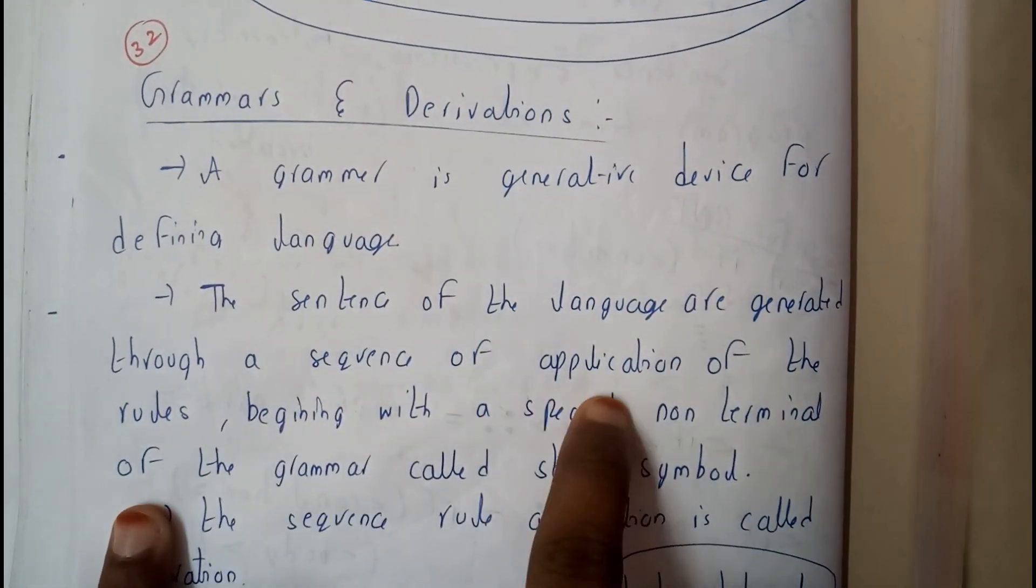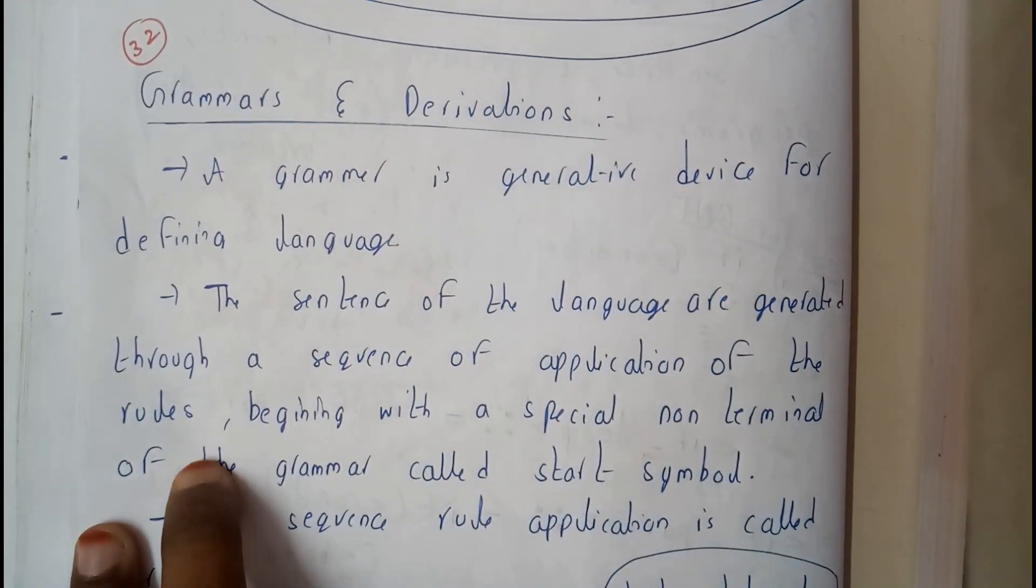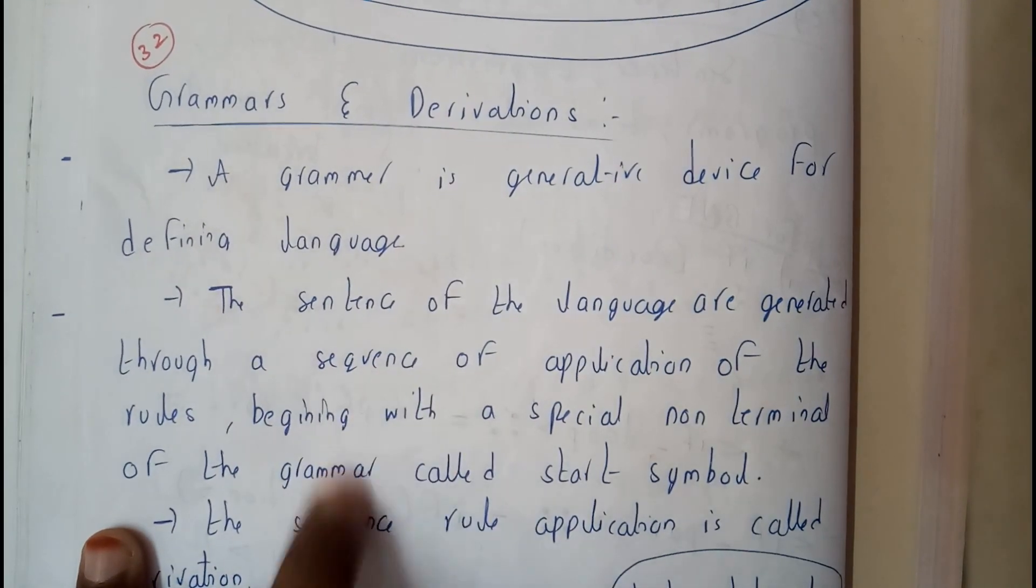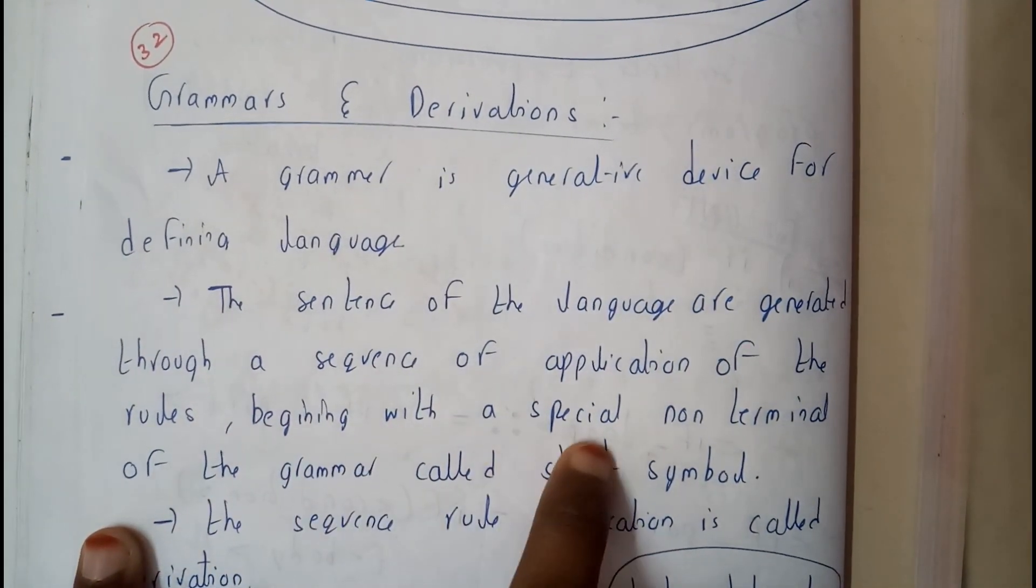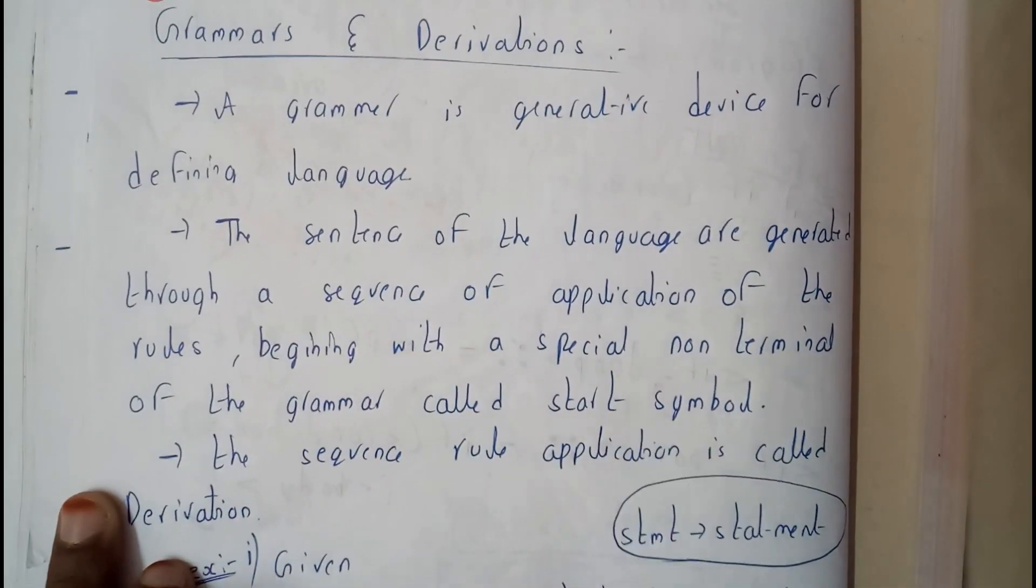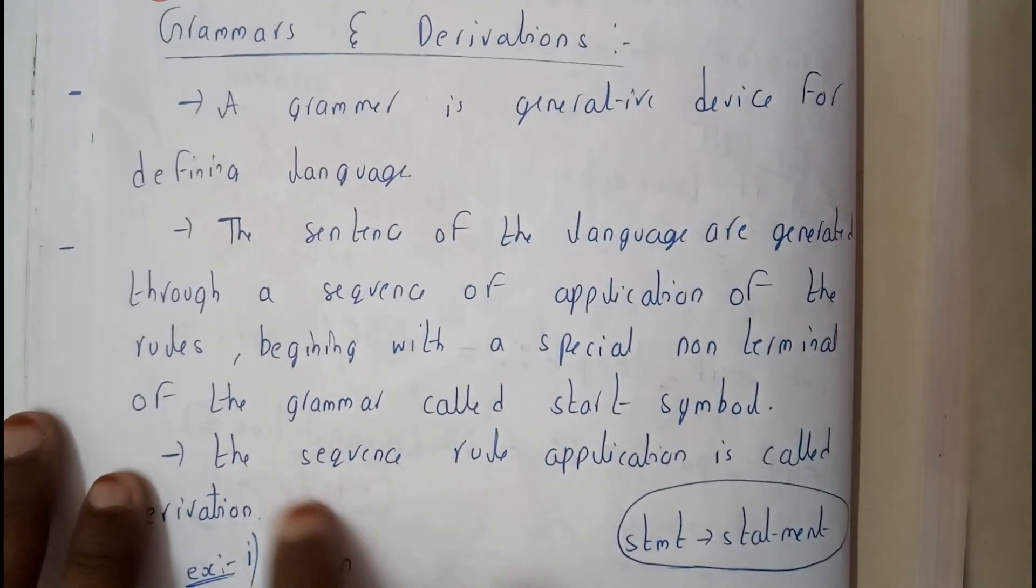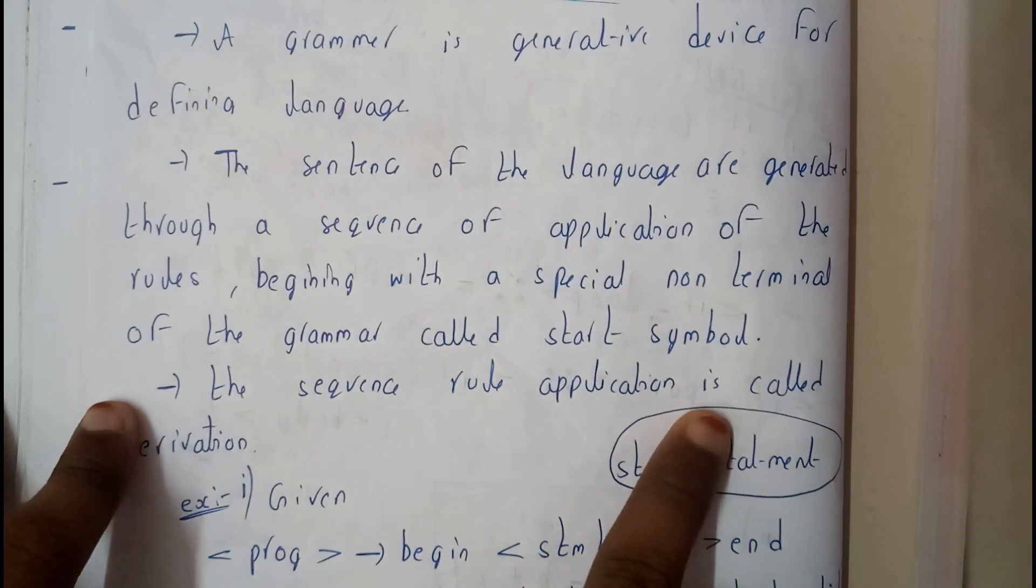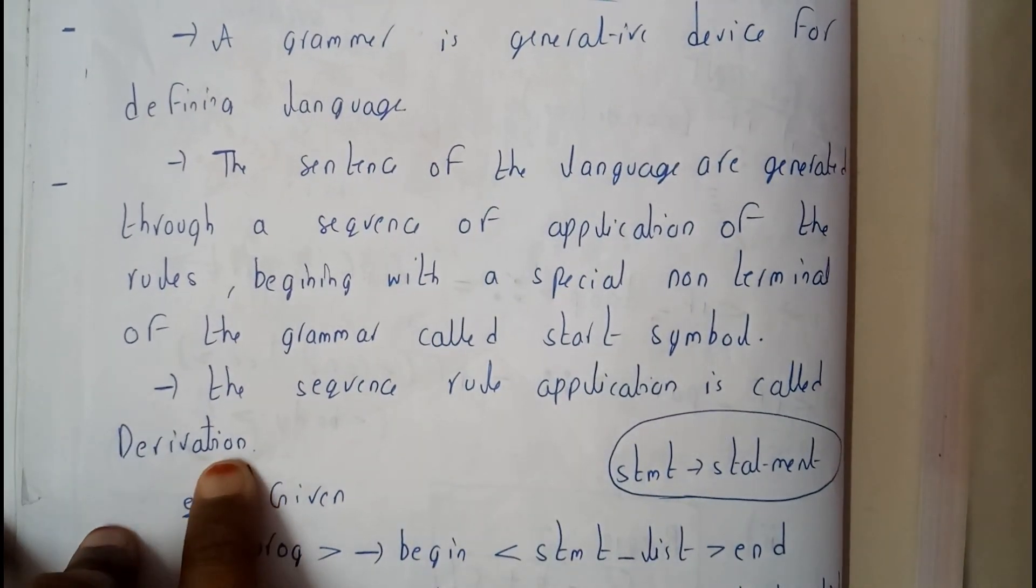The sentences of a language are generated through a sequence of applications of rules, one after the other. The rules will be applied beginning with a special non-terminal of the grammar called the start symbol, and this rule application is called derivation.